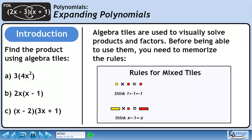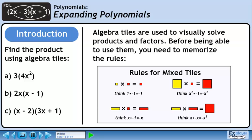A yellow rectangle times a small red square is a red rectangle. This represents x times minus 1 equals minus x. A large yellow square times a small red square is a large red square — x squared times minus 1 equals minus x squared. A yellow rectangle times a red rectangle is a large red square, the same as x times minus x equals minus x squared.